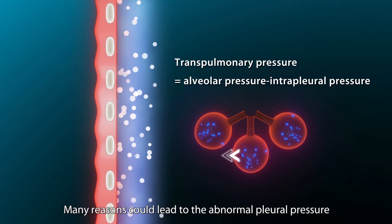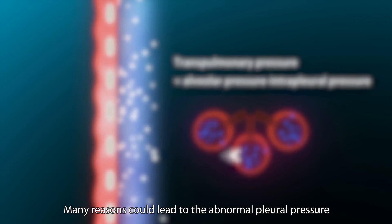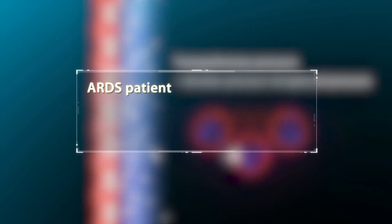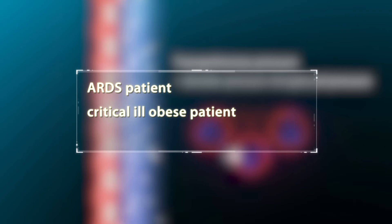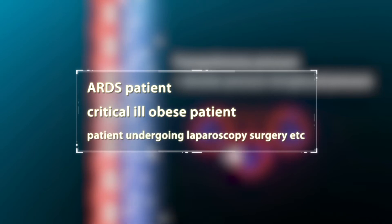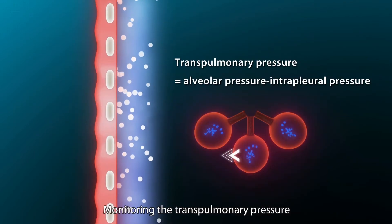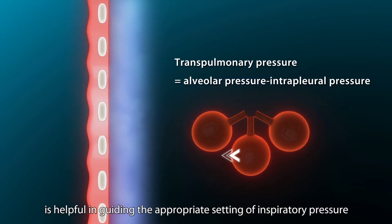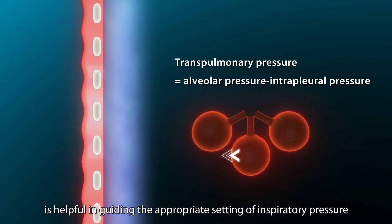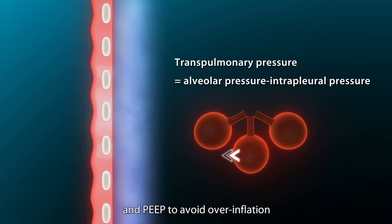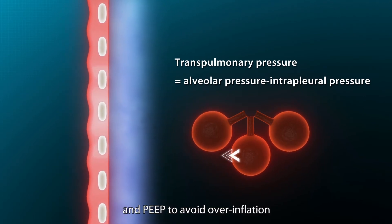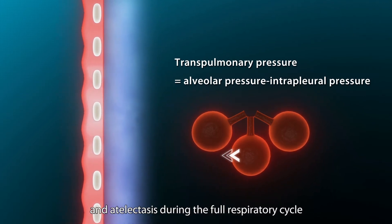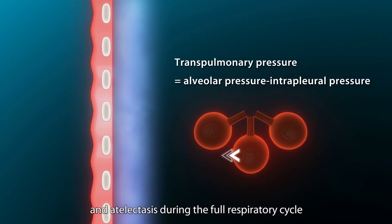Many reasons could lead to abnormal pleural pressure. For example, ARDS patients, critically ill patients, obese patients, patients undergoing laparoscopy surgery, etc. Monitoring the transpulmonary pressure is helpful in guiding the appropriate settings for inspiratory pressure and PEEP to avoid overinflation and atelectasis during the full respiratory cycle.